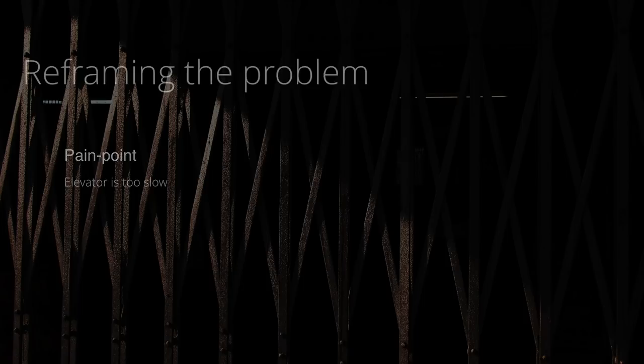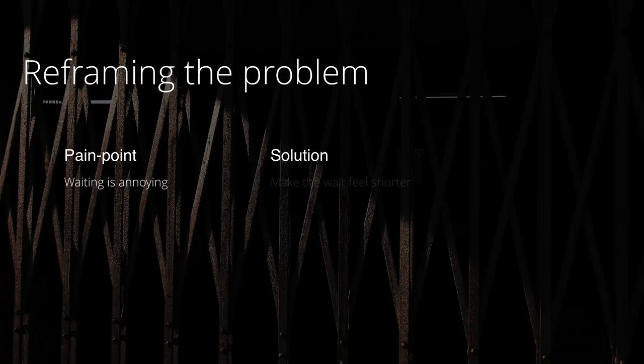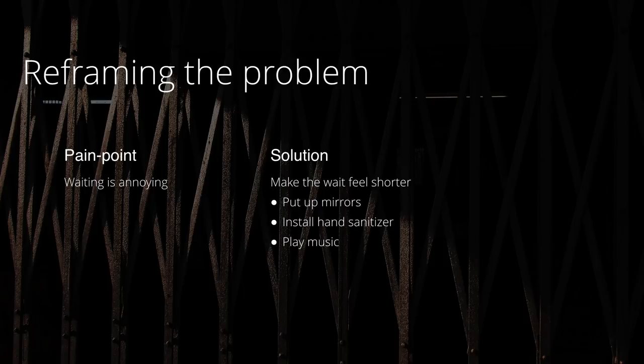So what can we actually do in these situations? Well, if we look at the problem and the pain point — the elevator is slow — from a user point of view, it's not so much the elevator being slow, but it's actually the waiting being quite annoying. So if we reframe the problem and say, OK, waiting is annoying, what can we do to make the waiting feel shorter? Building managers will put up mirrors, install hand sanitizer, and perhaps play music. This distraction technique will actually make the whole experience feel much faster. Reframing the problem can help us think about how we can hack things perceptively for users.